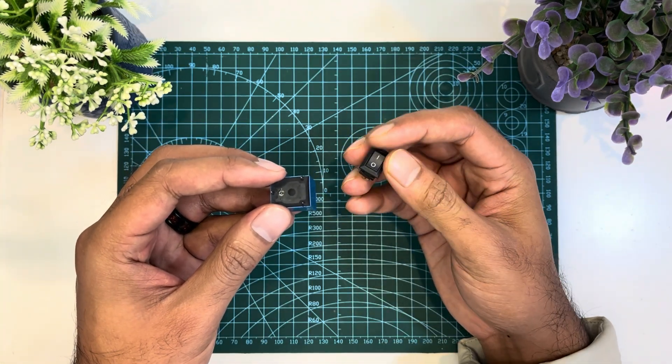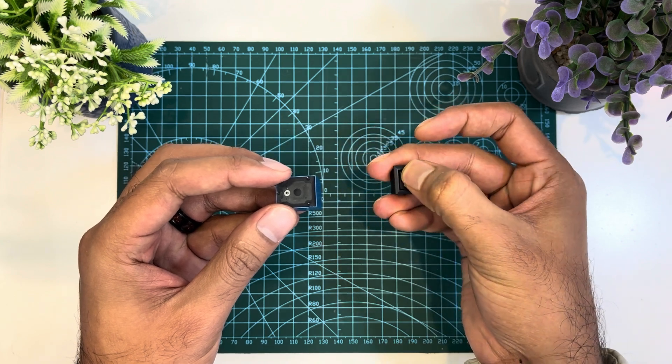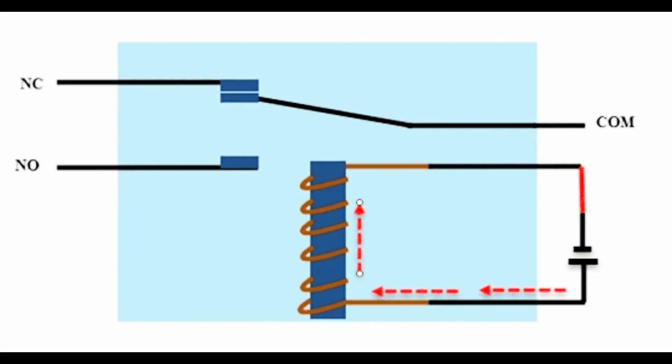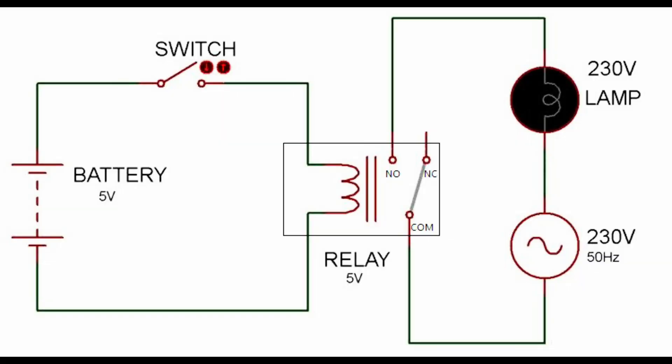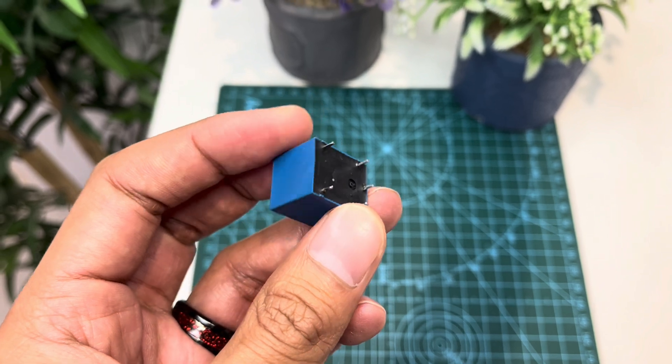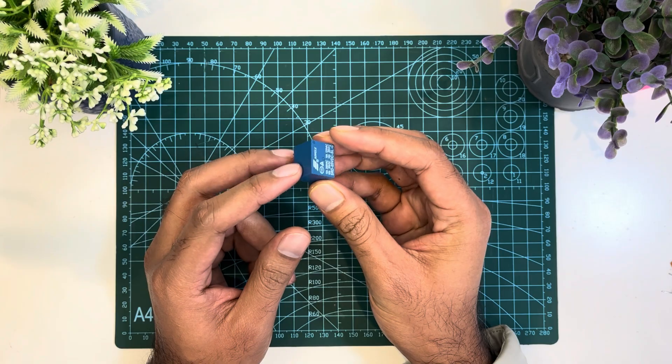But instead of manual operation, a relay uses an electrical signal to control an electromagnet, which in turn connects or disconnects another circuit. Relays are the most commonly used switching device in electronics. Let us learn how to use one in our circuits based on the requirement of our project.